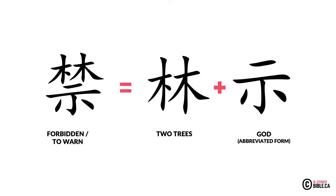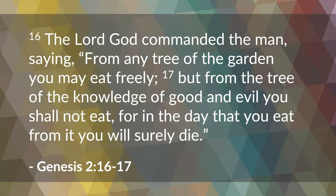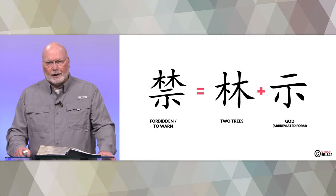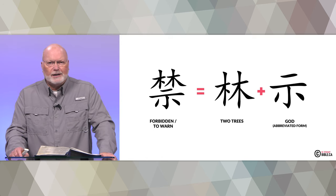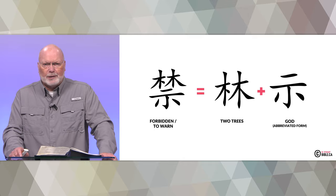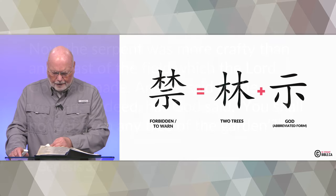Here we have the Chinese character representing 'forbidding' or 'warning,' made up of two characters: one character for 'two trees,' combined with 'God,' to give the idea of warning. Genesis chapter 2, verses 16 and 17: 'The Lord God commanded the man, saying, From any tree of the garden you may eat freely, but from the tree of knowledge of good and evil you shall not eat, for in the day you eat from it you will surely die.' God gave Adam a warning about two trees, and this Chinese symbol represents that truth very well.